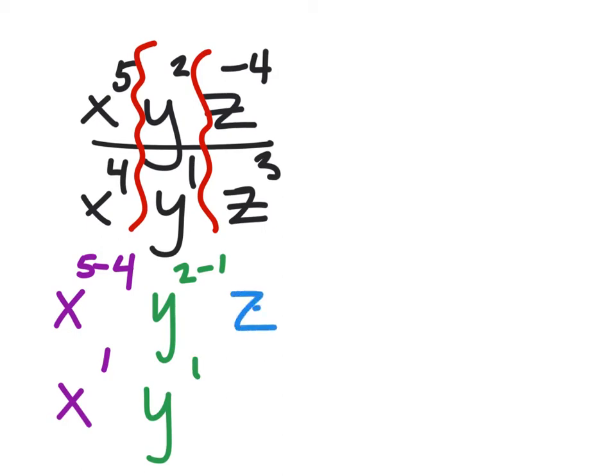And then the Z's, we've got that negative 4 in the numerator, and we'll subtract 3 from the denominator exponent, which would be Z to the power of negative 7.